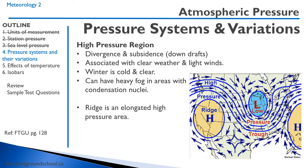You can also have a ridge — a ridge is an elongated high pressure area. Looking at the image on the right, we have the high pressure, and here we have the ridge. You can see it makes this ridge shape.